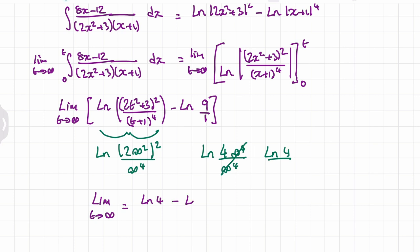So the overall result is ln(4) - ln(9), which by the division rule simplifies to ln(4/9). Therefore k = 4/9.